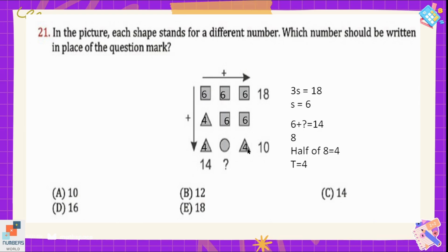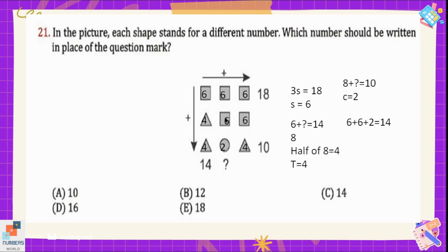The sum of 2 triangles and 1 circle equals 10. Since 8 plus what equals 10, the circle equals 2 (4 + 4 + 2 = 10). Now the question mark equals 6 plus 6 plus 2, which is 14. So option C is the correct option.